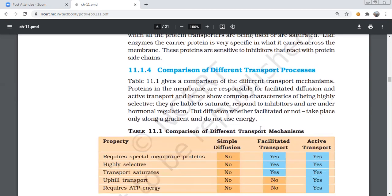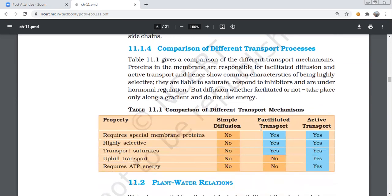So comparison between the transport processes - a table showing what we've learned so far about the three transport systems: simple diffusion, facilitated transport, and active transport, showing their common characteristics and selectivity.